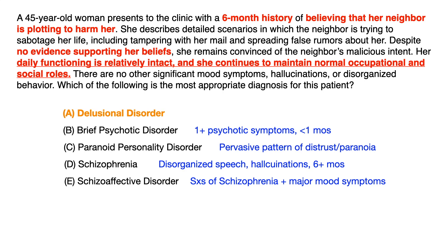Key takeaways for test day: First, for psychiatry questions, pay attention to the timeline. Second, if it's delusional disorder, the patient is functioning normally — working, maintaining relationships, going to school — and the delusion will be non-bizarre, meaning it could realistically happen, although unlikely. It won't be something like a dead celebrity being involved — it has to be perceivably possible.